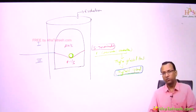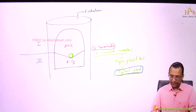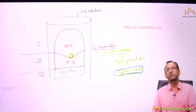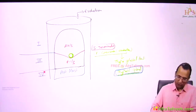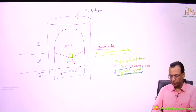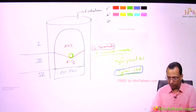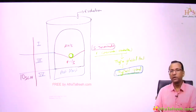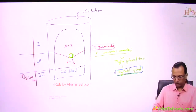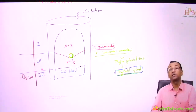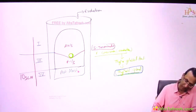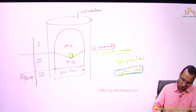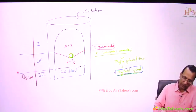The fourth arch forms the posterior most tongue and also the epiglottis. The nerve of the fourth arch is a branch of the vagus — specifically the superior laryngeal nerve, supplying the epiglottis. The superior laryngeal nerve, which is the nerve of the fourth arch, will not only supply the epiglottis but also the posterior most tongue. So posterior most tongue and epiglottis have the same nerve supply.